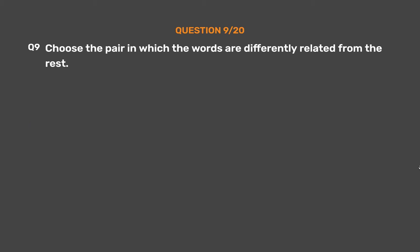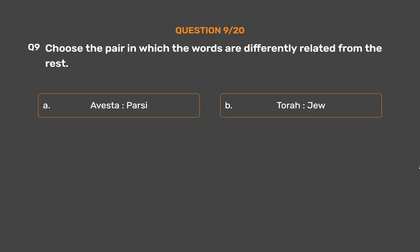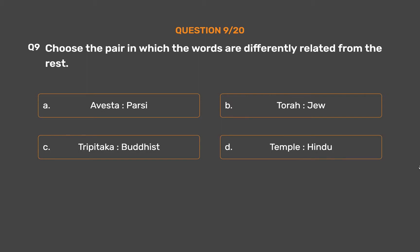Question number 9. Choose the pair in which the words are differently related from the rest. Option A: Avesta, Parsi. Option B: Torah, Jew. Option C: Tripitaka, Buddhist. Option D: Temple, Hindu.